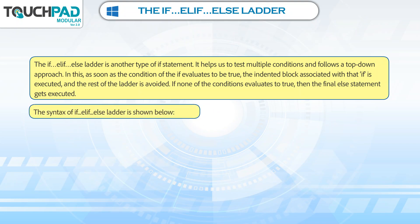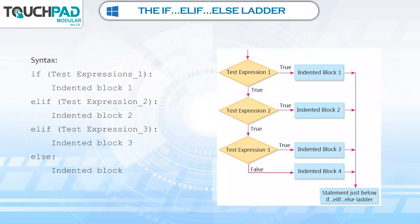The syntax of the if-elif-else ladder is shown below. If test expression 1 is true, then statement 1. If test expression 2 is true, then statement 2. If test expression 3 is true, then statement 3. If it is false, then the body of else — which all leads to the statement just below the if-elif-else ladder.